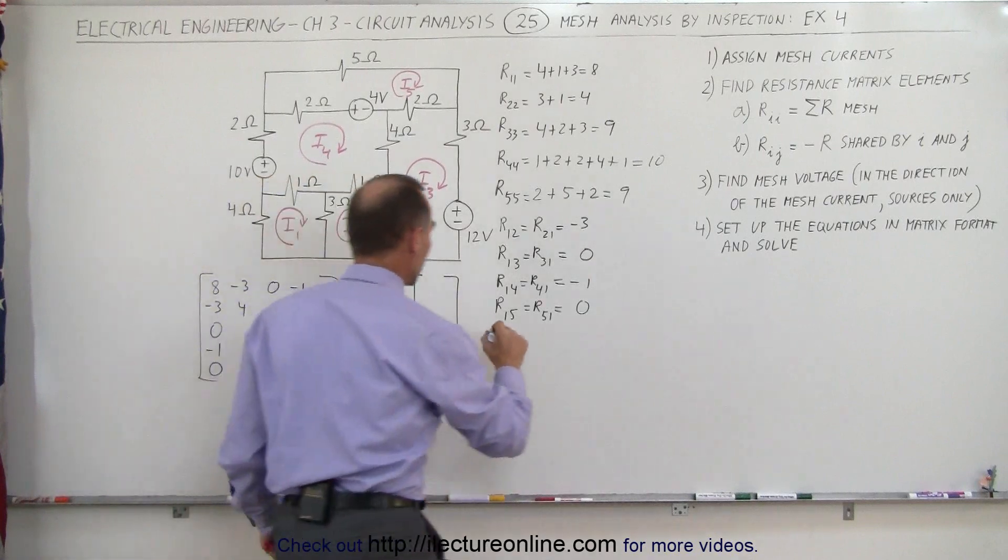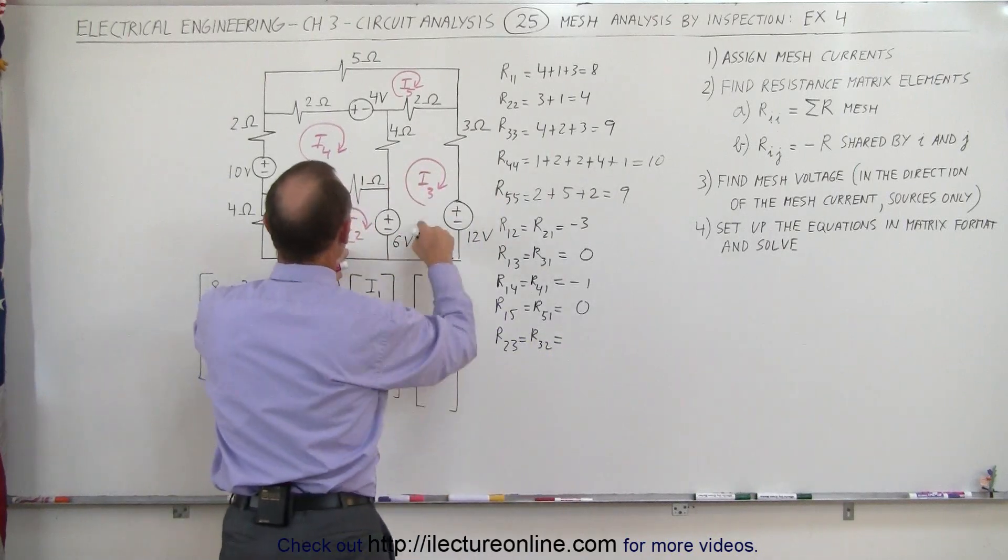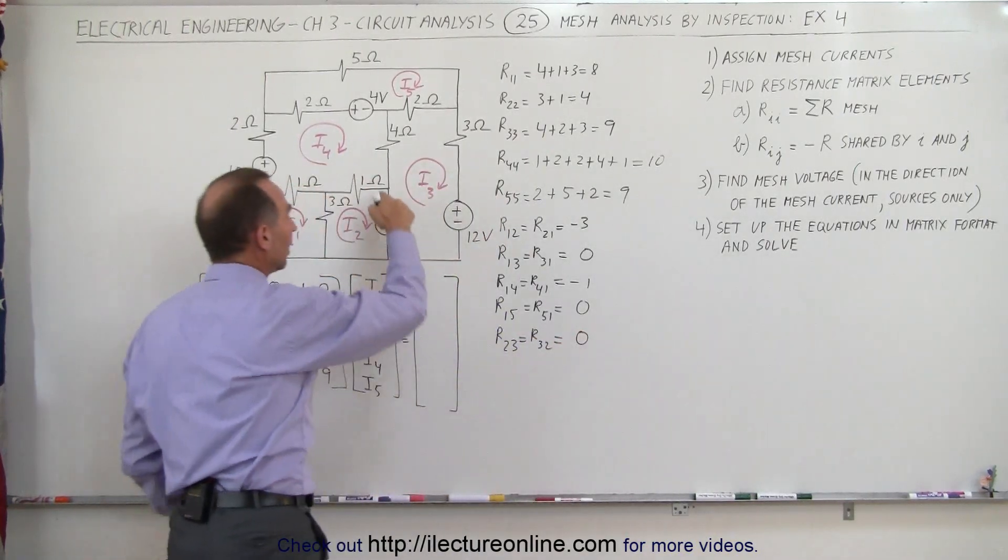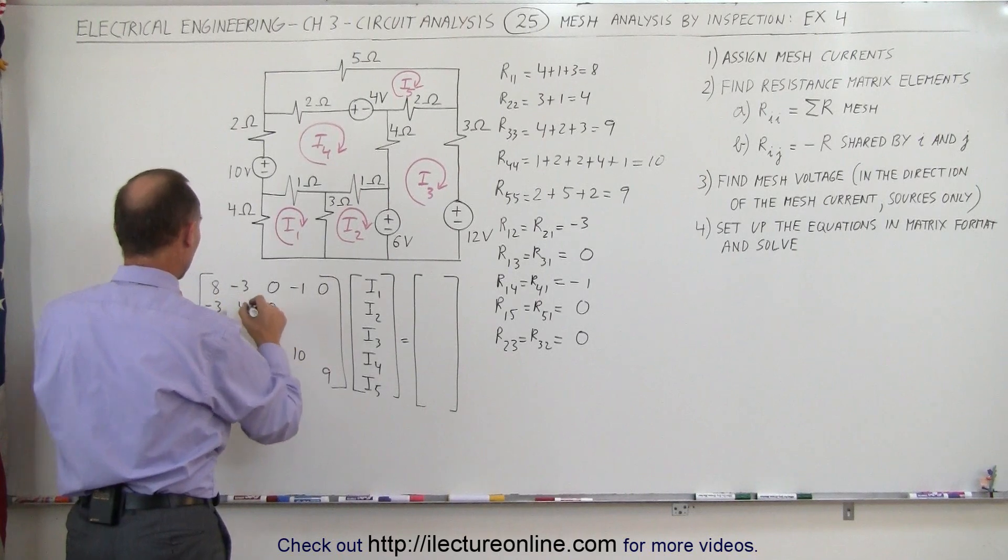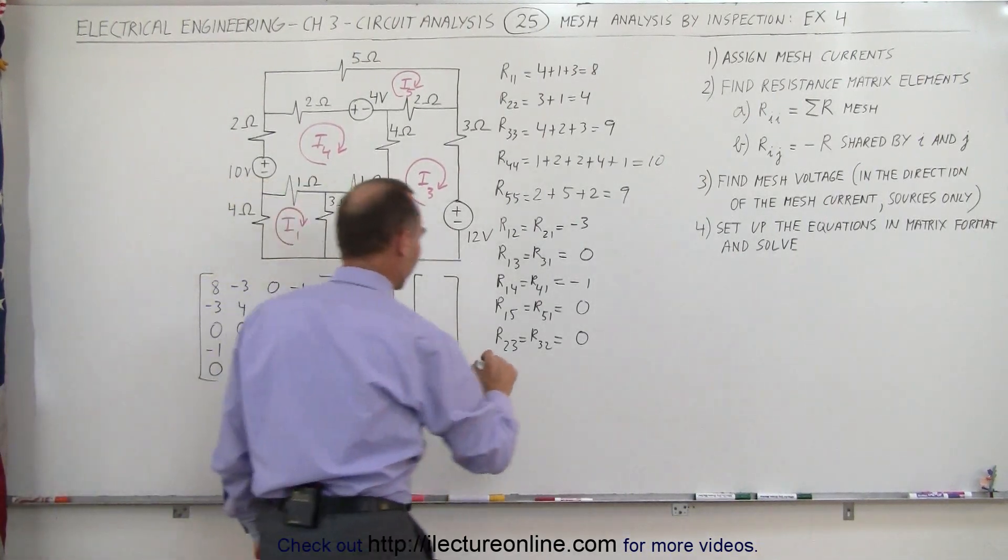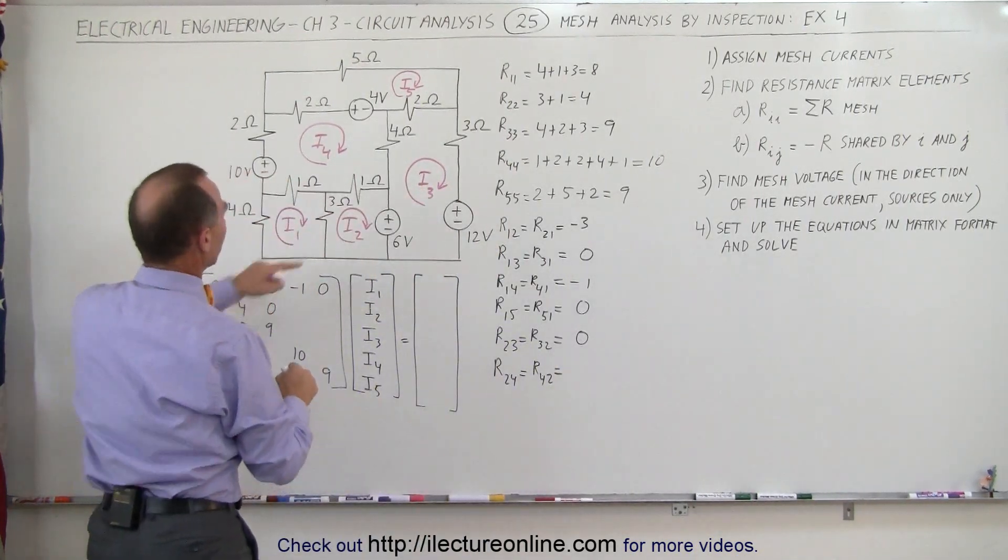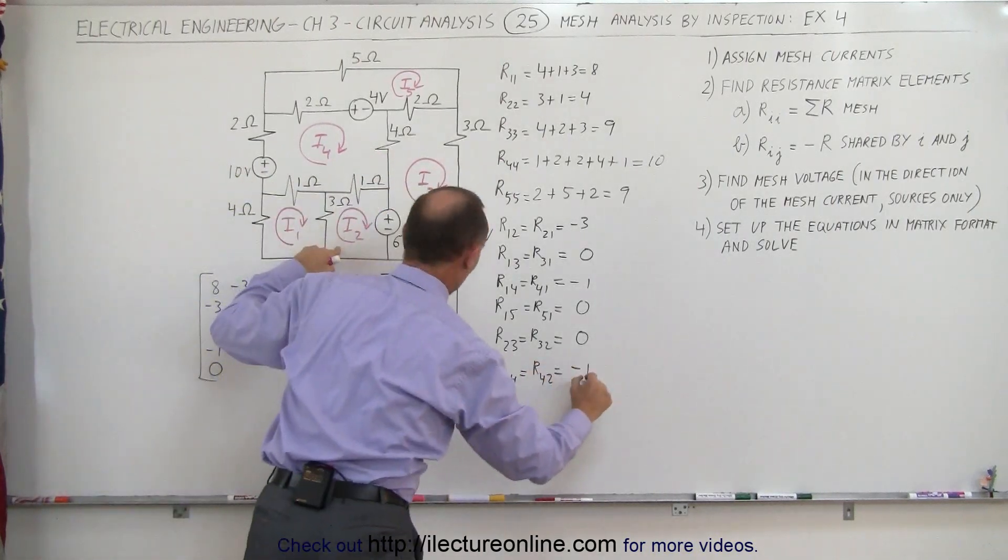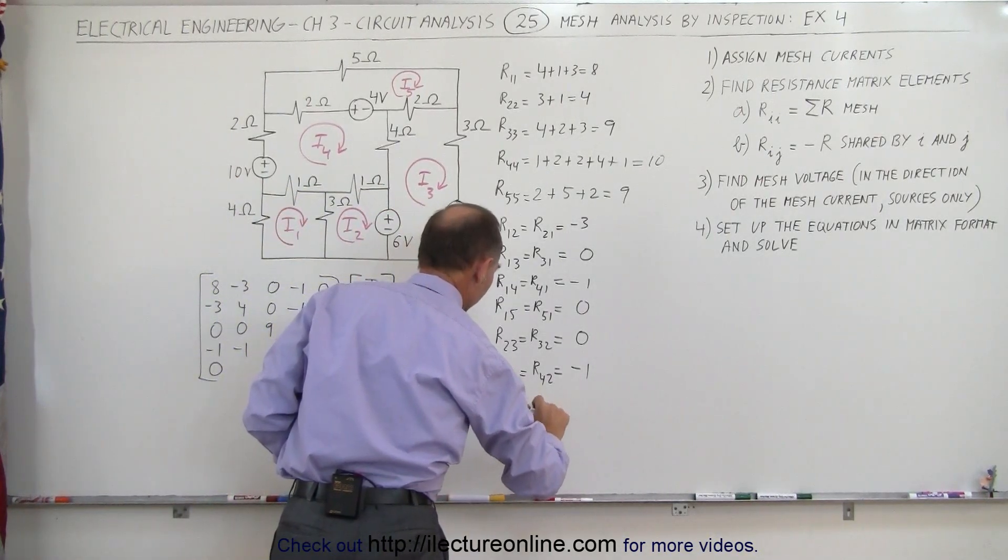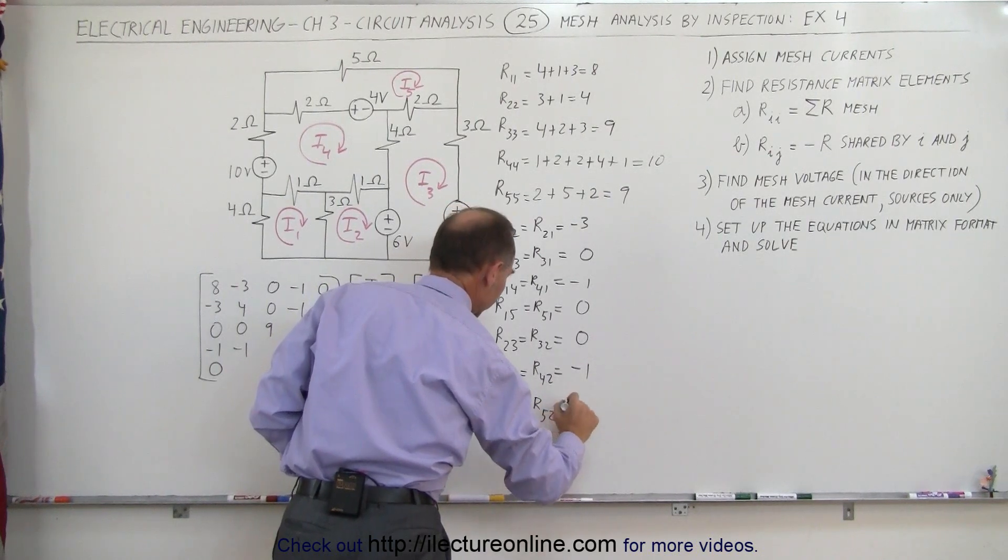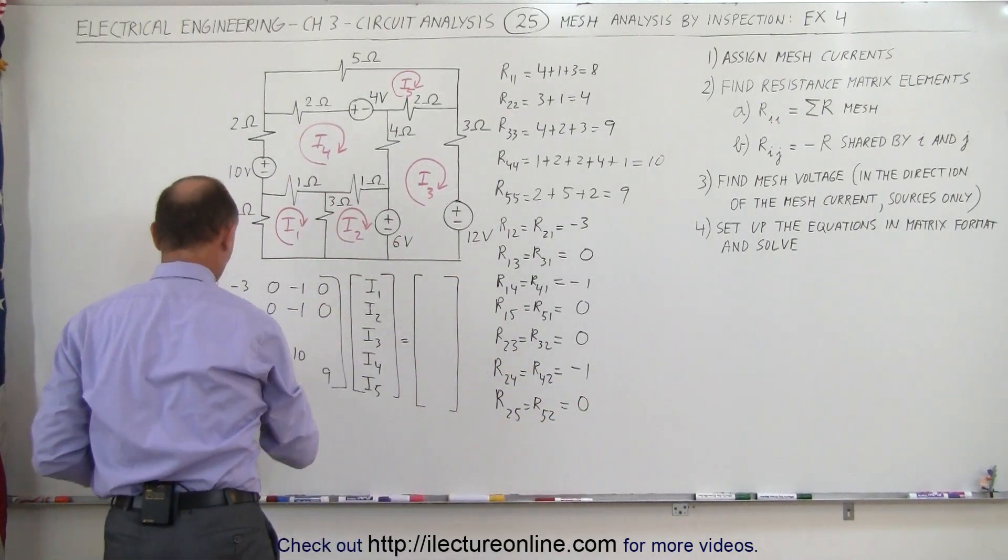Now we go on to R2. R23 equals R32. Between 2 and 3, we do not share any resistors, that's equal to 0. We share a voltage source, but we don't share a resistor. Now we go from R2 to 4. R24 equals R42. Meshes 2 and 4 do have a 1 ohm resistor in common, minus 1. Now we have R25 equals R52. Between 2 and 5 nothing's being shared, that's 0.